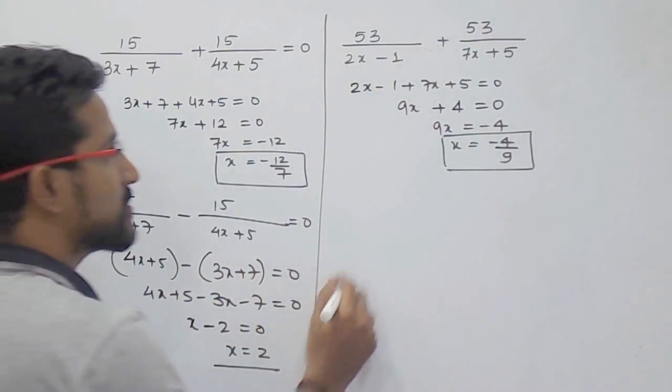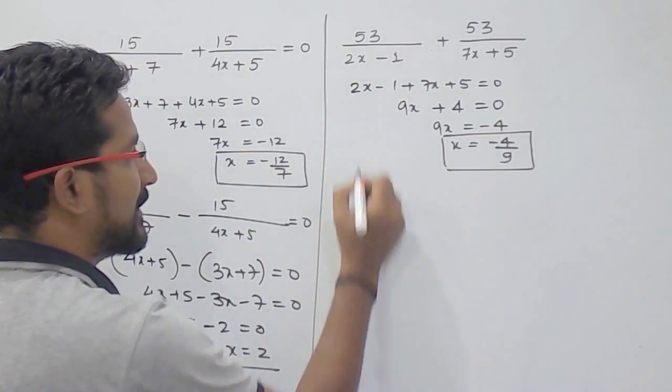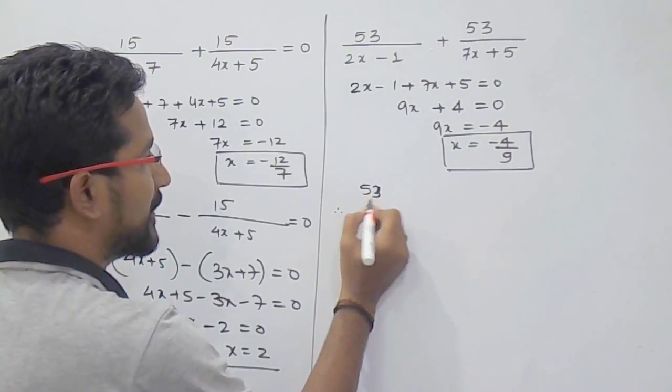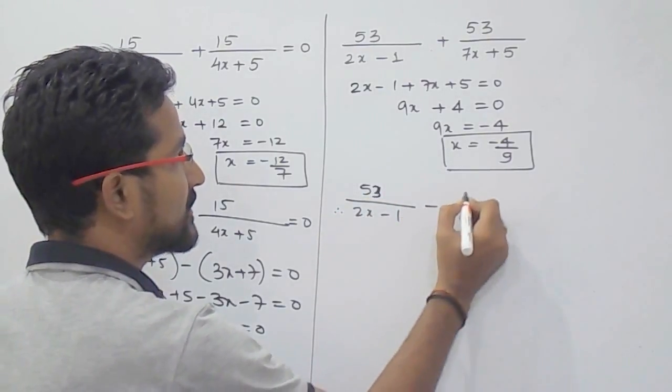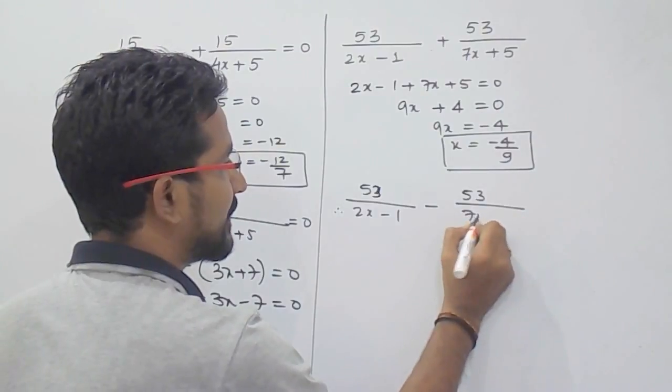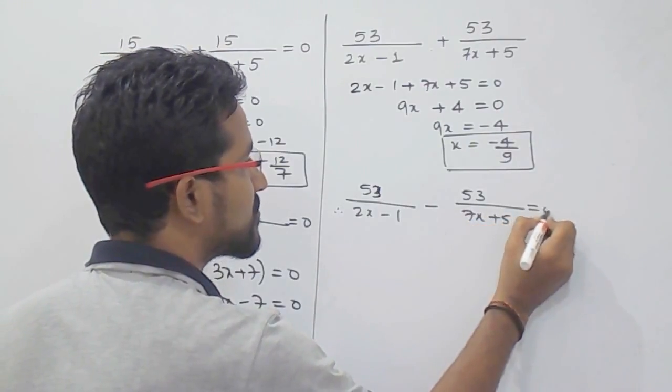Similarly here also you can do the same thing. If it is 53 upon 2x minus 1 minus 53 upon 7x plus 5 equals 0.